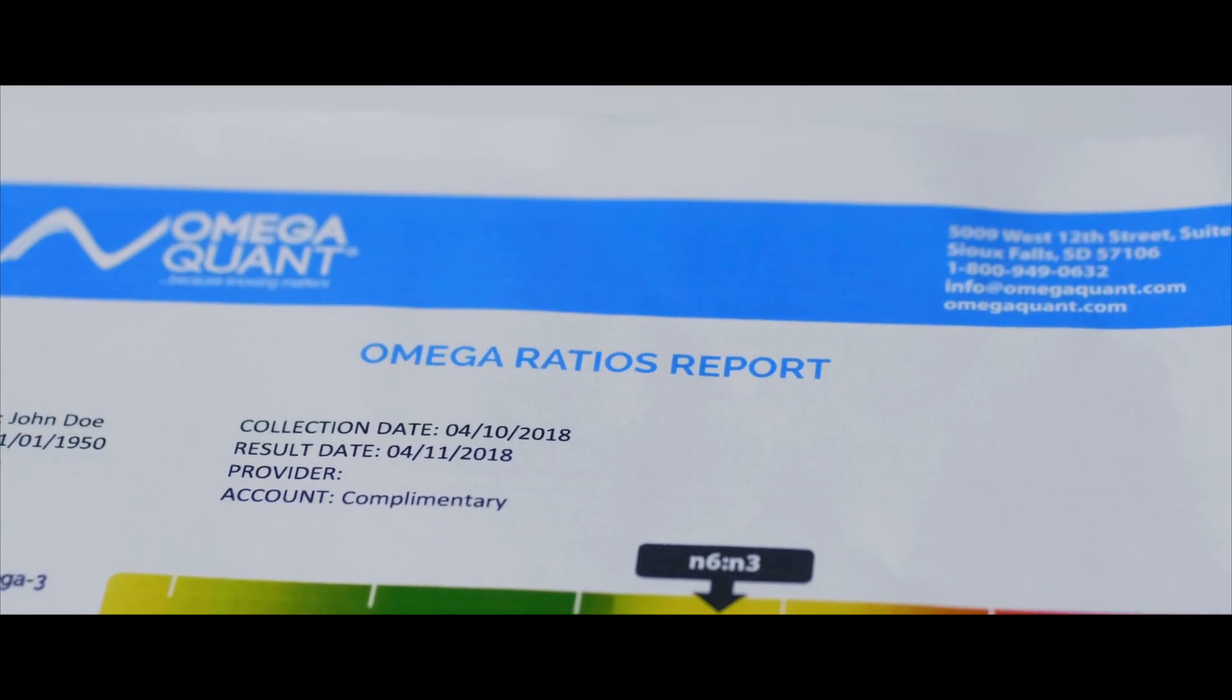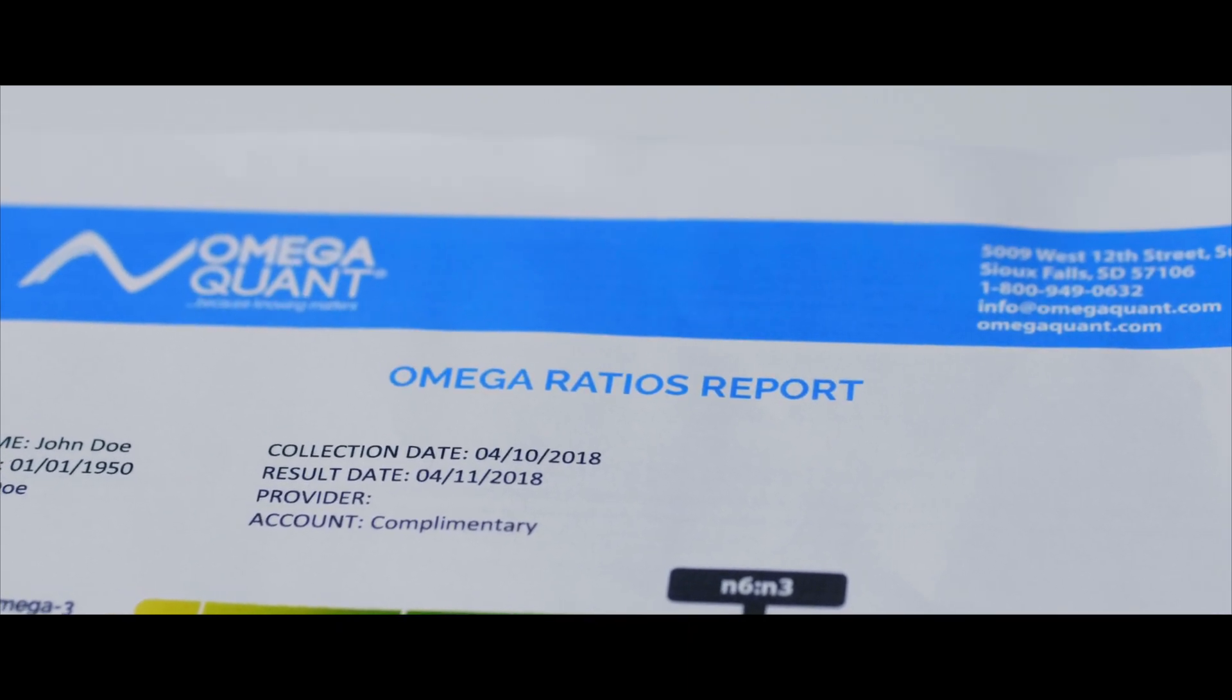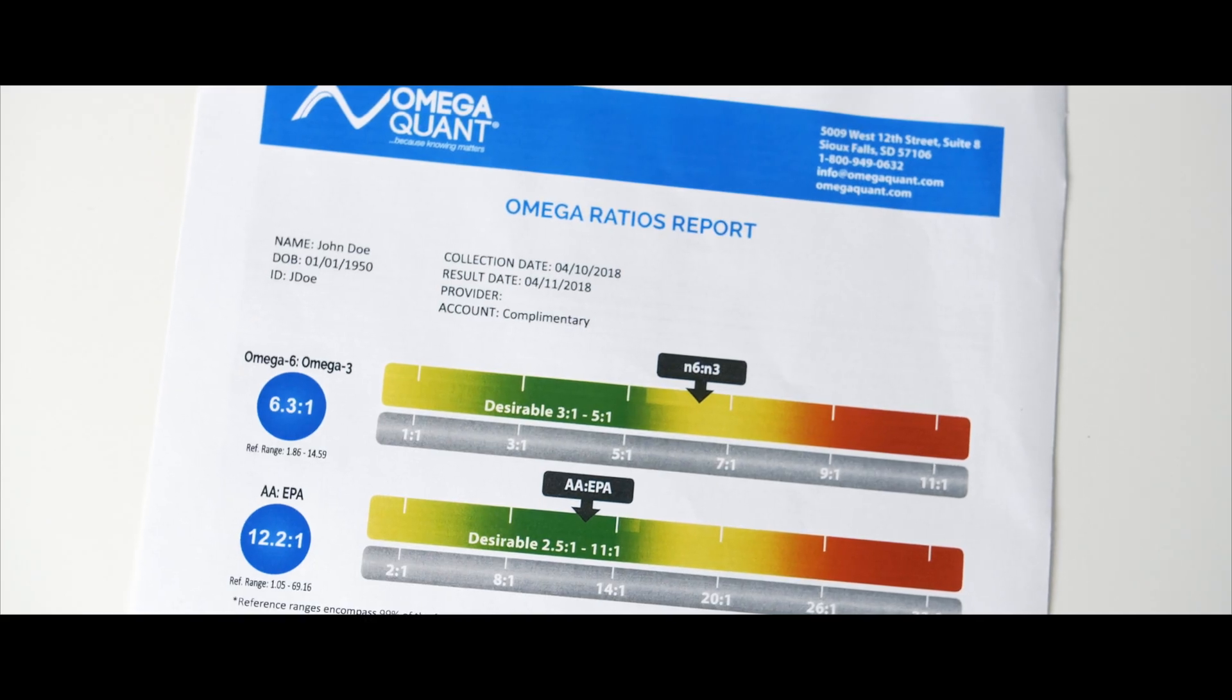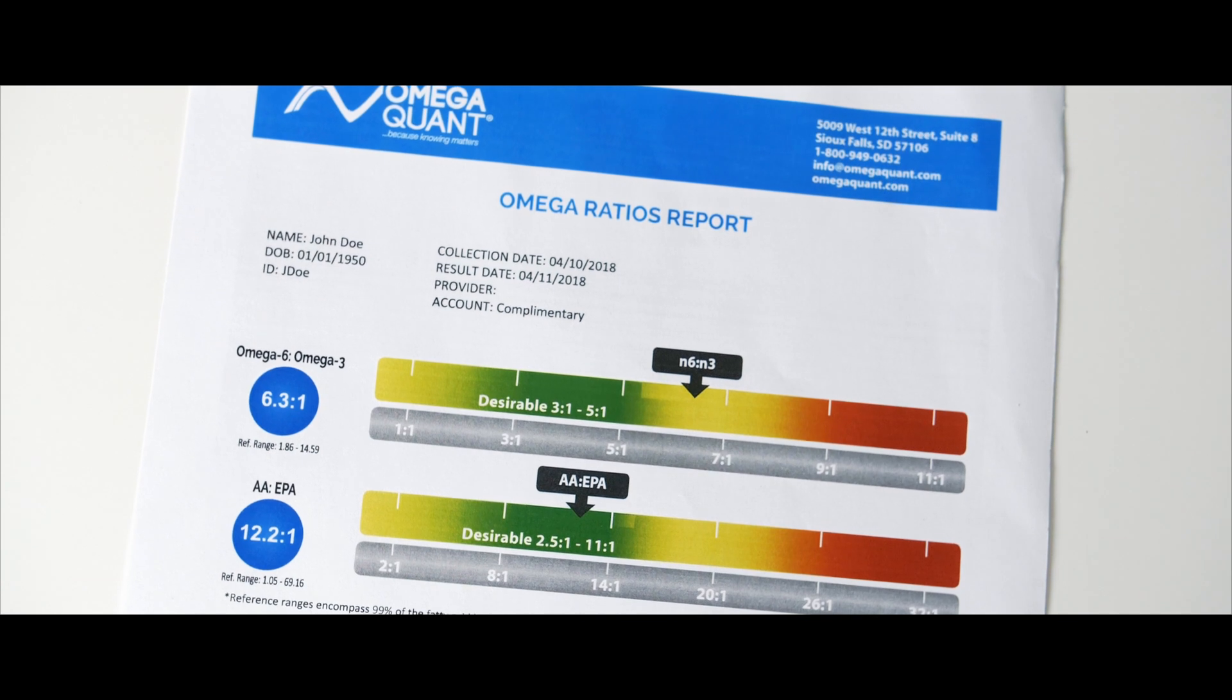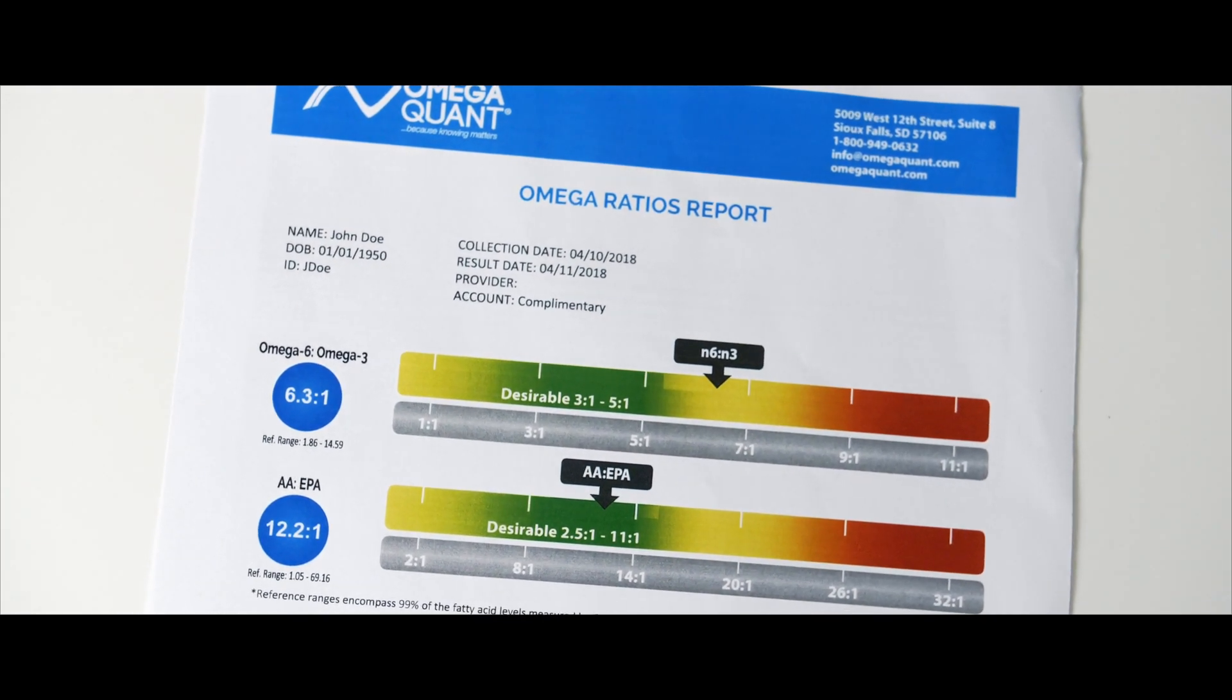It's important to consider with ratios that now you have two different values that could be changing and causing your ratio to be in a certain range, high or low. And it's confusing and we aren't completely clear on how to optimize each ratio as we are clear about how to optimize the omega-3 index.